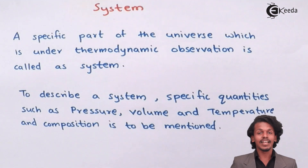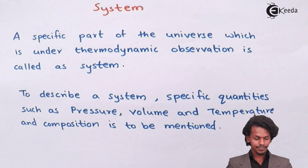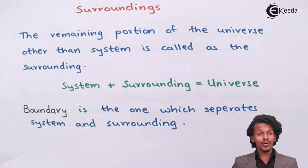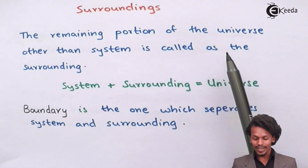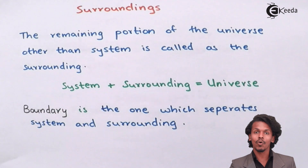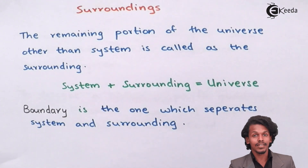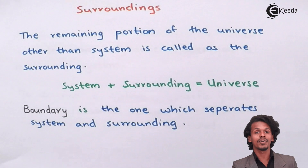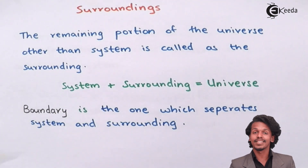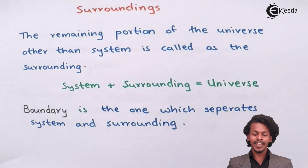Talking about surrounding — surrounding means the remaining portion of the universe other than the system is called the surrounding. As I mentioned earlier, when water is being boiled, the system was the boiling water. But the other components — such as me, the room, or the rest of the environment — that are not under thermodynamic observation are considered as the surrounding.